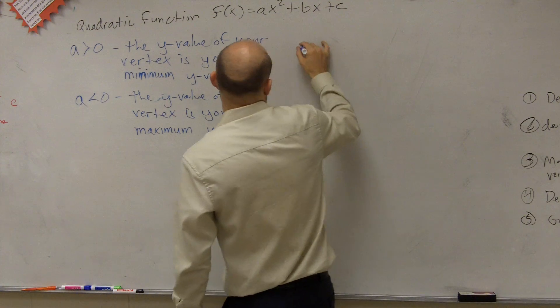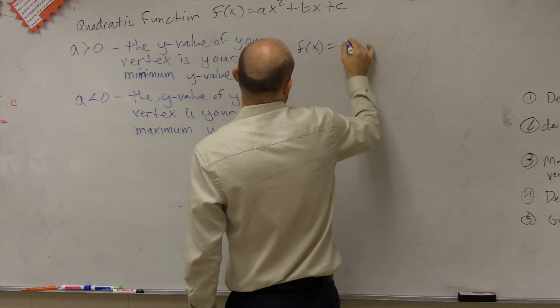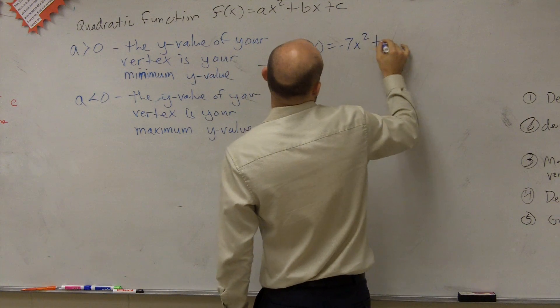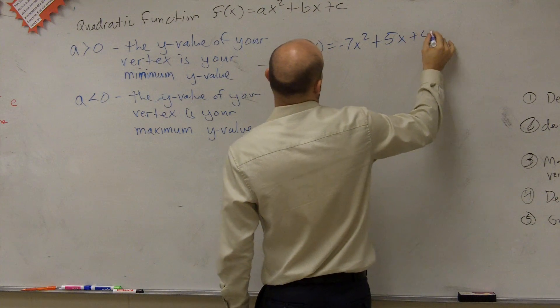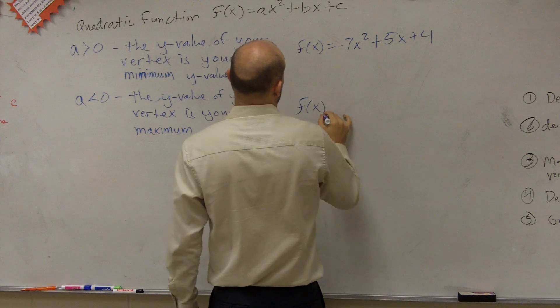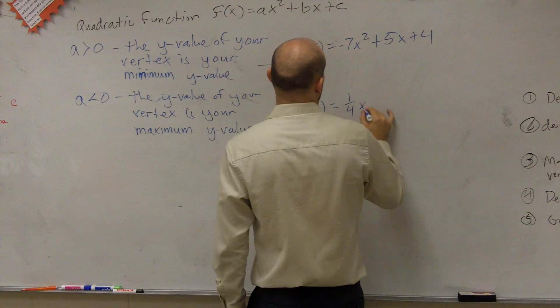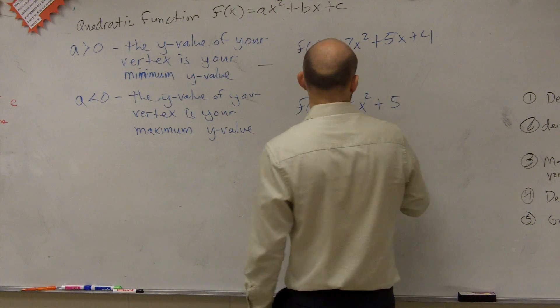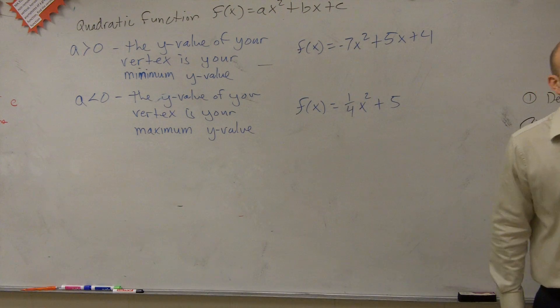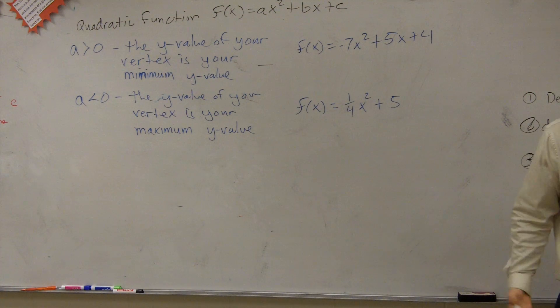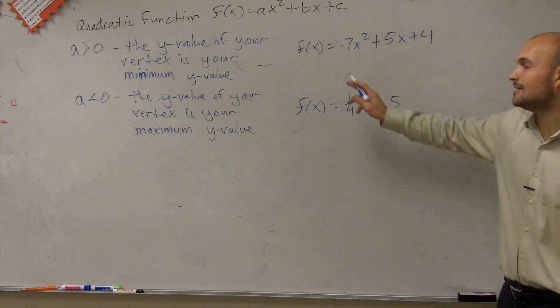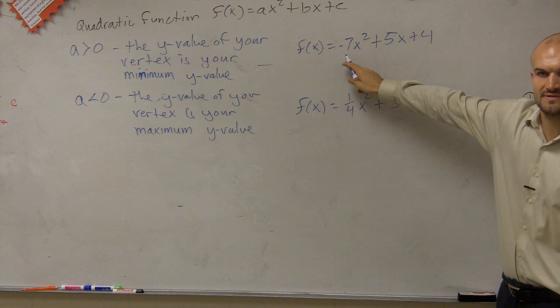and I just say f of x equals negative 7x squared plus 5x plus 4. And then I'd say f of x equals 1 fourth x squared plus 5. And I say, do I have a maximum or a minimum? Well, you guys need to algebraically look at this. First of all, you say, what is your a? My a, in this case, is negative 7.